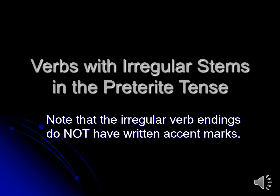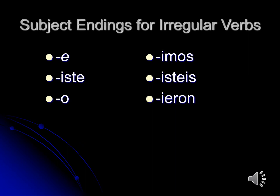There are some stem-changing verbs in the preterite tense. These verbs have irregular stems, but again, the irregular verb endings do not have written accent marks. The stems may be irregular, but the endings follow a pattern: the yo ending is E — just an E, no accent mark. The tú ending is ISTE. The él/ella/usted third person singular ending is O — just O, no accent mark. The nosotros ending is IMOS, the vosotros ending is ISTEIS, and the third person plural ellos/ellas/ustedes ending is IERON.